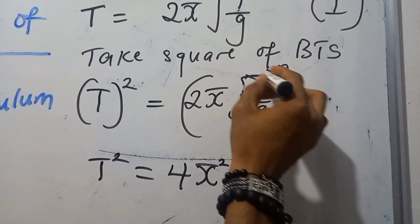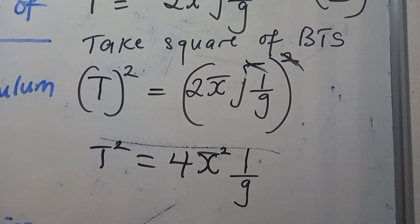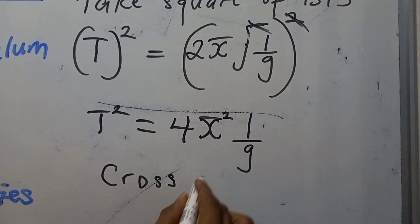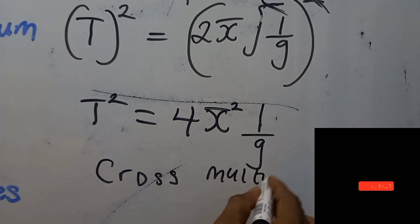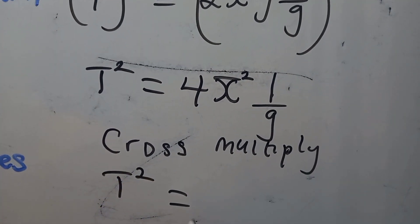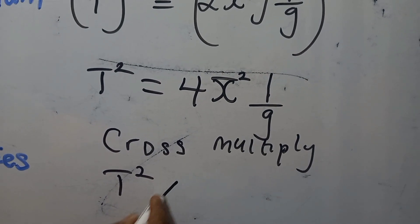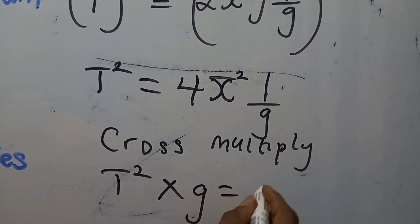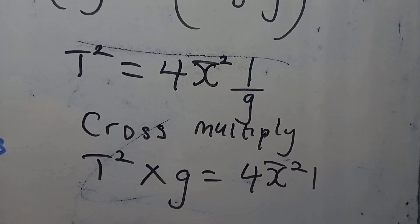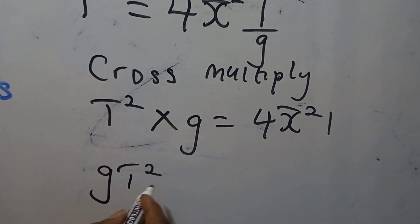Because this is a fraction, we multiply. So we put: T squared times g equals four pi squared times i.